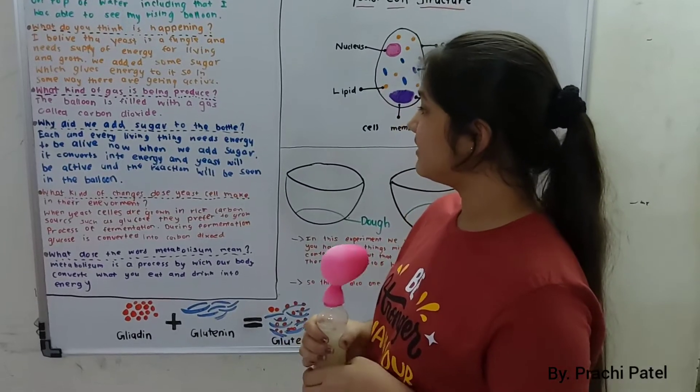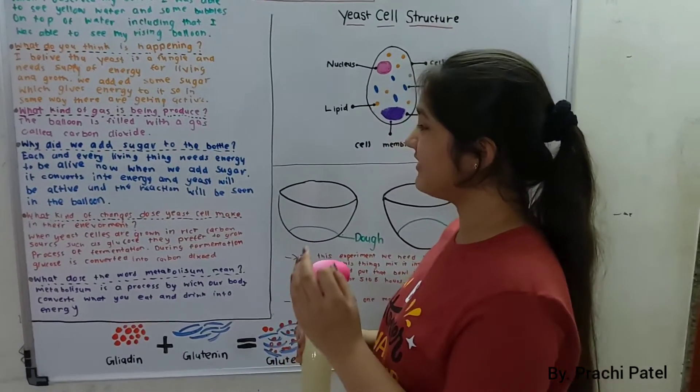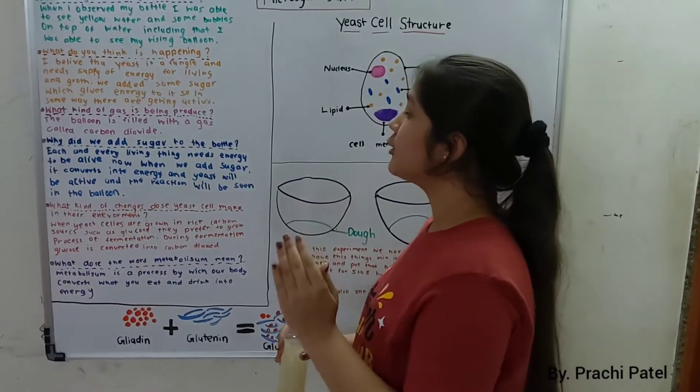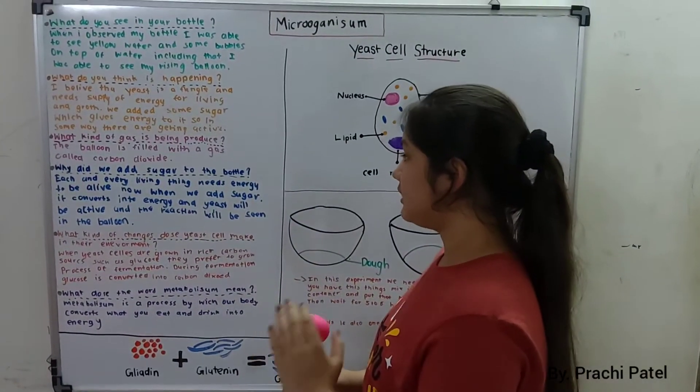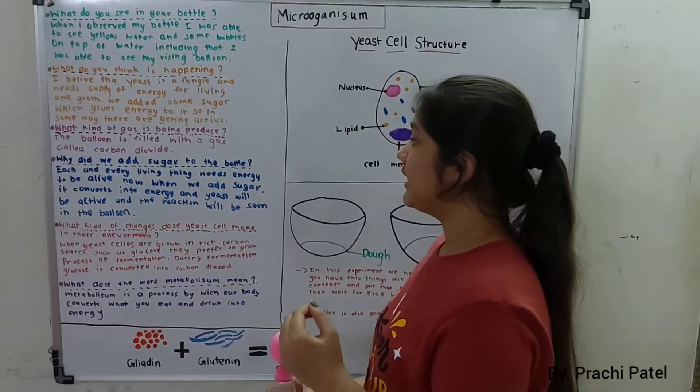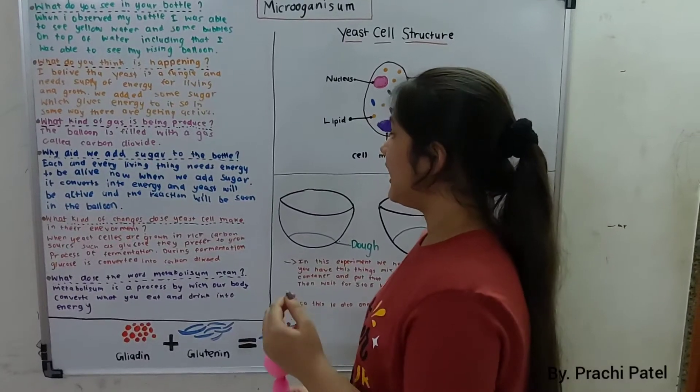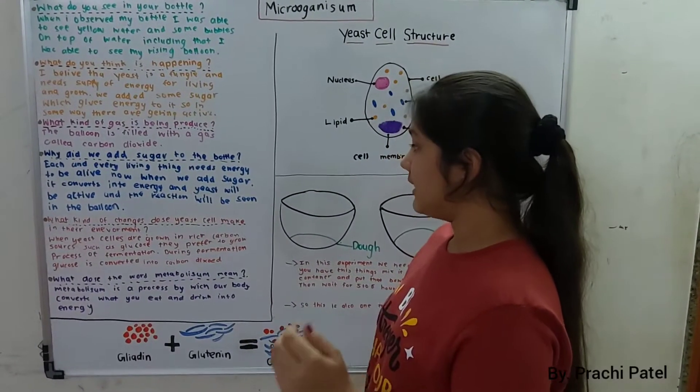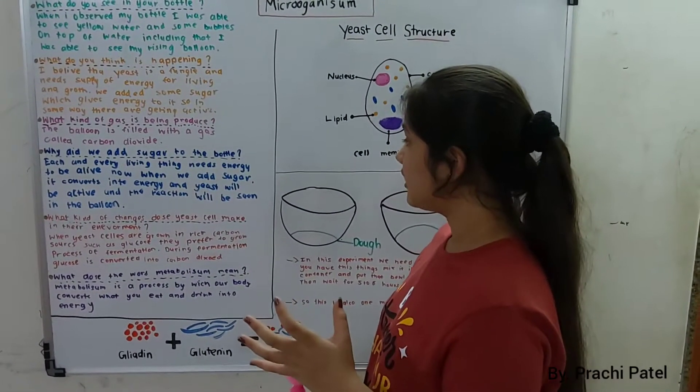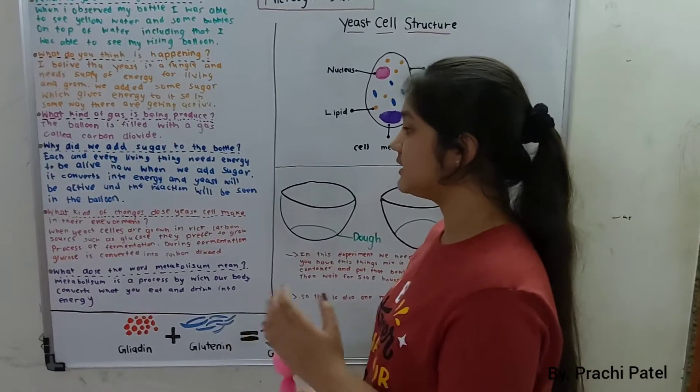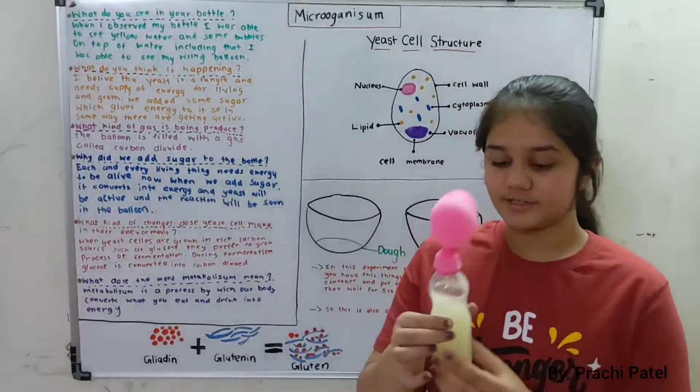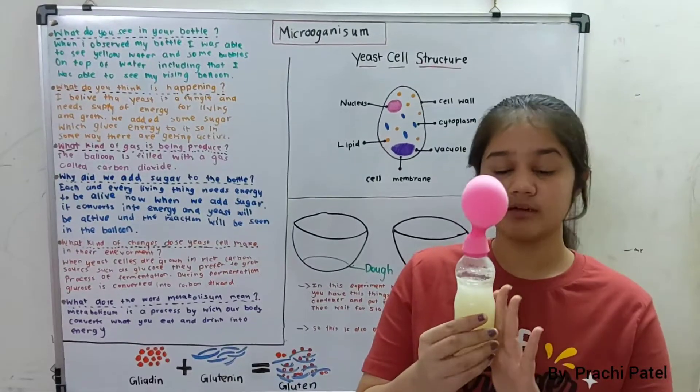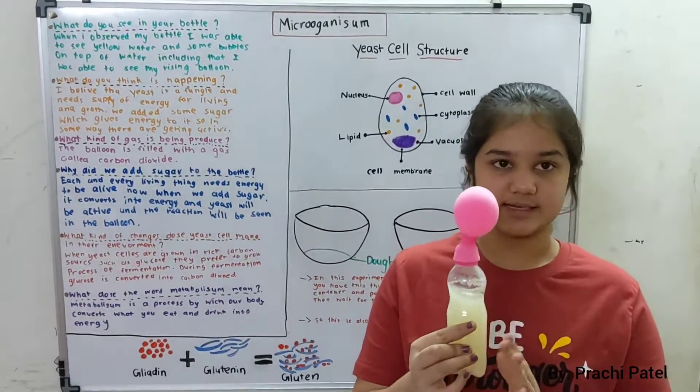Why did we add sugar to the bottle? Each and every living thing needs energy to be alive. When we add sugar, it converts into energy and yeast will be active. And through reaction, the reaction will be seen soon in the balloon.